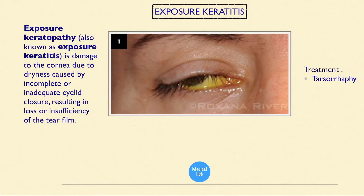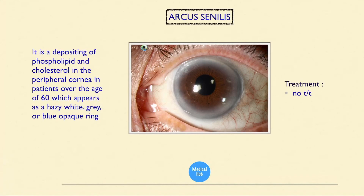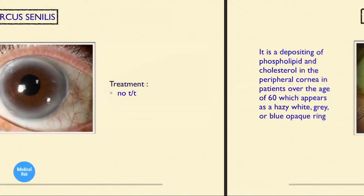This is exposure keratitis, also known as exposure keratopathy — damage to the cornea due to dryness caused by incomplete or inadequate eyelid closure, resulting in insufficiency of the tear film. Treatment is tarsorrhaphy. This is arcus senilis — a depositing of phospholipid and cholesterol in the peripheral cornea in patients over the age of 60, which appears as a hazy, white, grey, or blue opaque ring. No treatment.